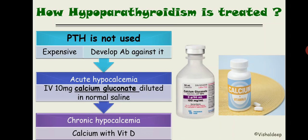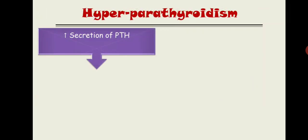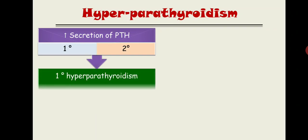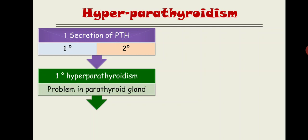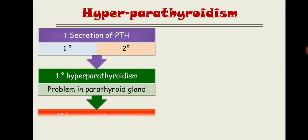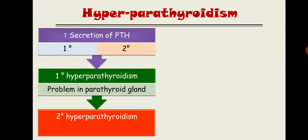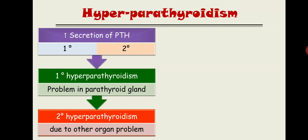Hyperparathyroidism involves increased secretion of parathyroid hormone and has two types: primary and secondary. Primary hyperparathyroidism is a problem within the parathyroid gland itself. The main causes are solitary adenoma — a small benign tumor of the parathyroid gland.